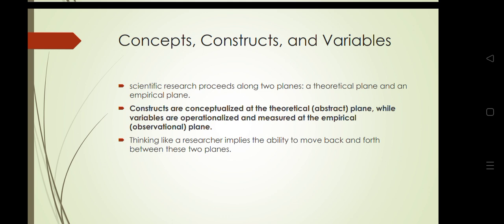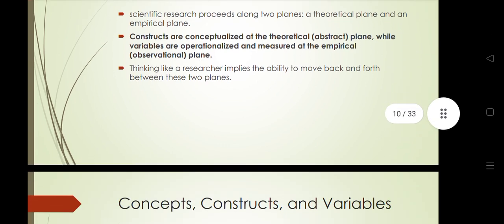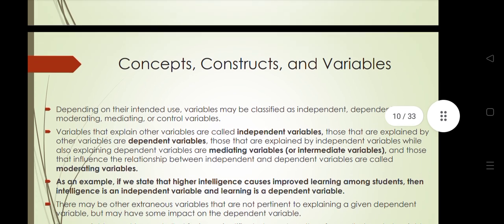The independent variable does not depend on other variables — it is independent. To understand this through an example: in the growth of a plant, we can take two variables — the growth of the plant and the sunlight. The sunlight is the independent variable, and the growth of the plant is the dependent variable because it depends on sunlight.